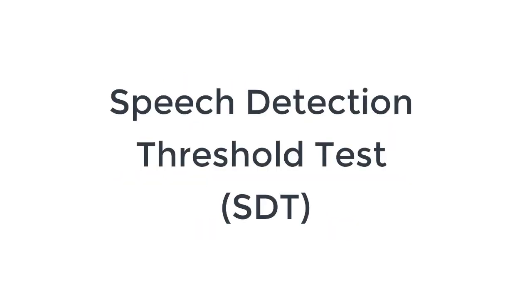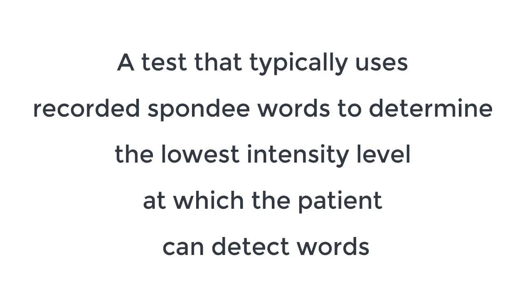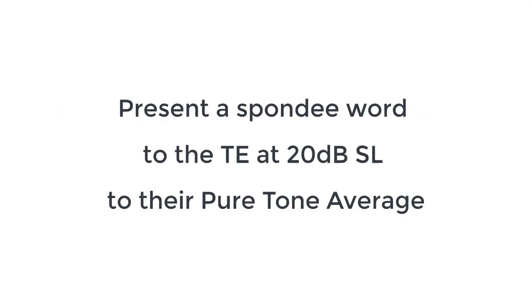One type of speech test is called the Speech Detection Threshold, or the SDT. It is a test that typically uses recorded spondee words to determine the lowest intensity level at which the patient can detect words. You want to present a spondee word to the test ear at 20 dB SL relative to their pure tone average.